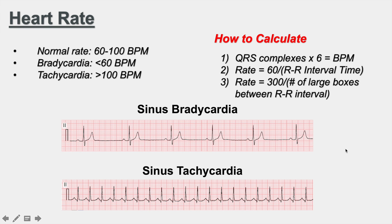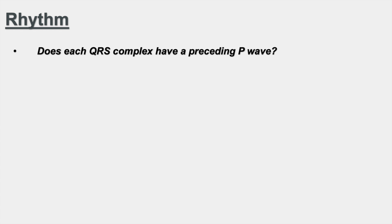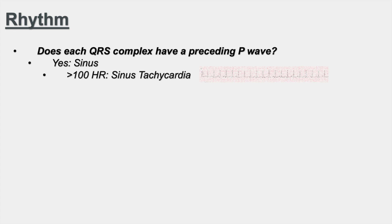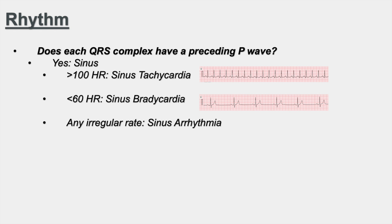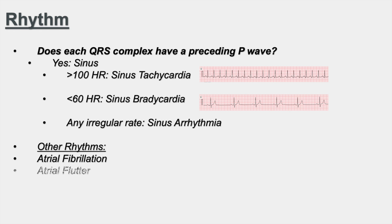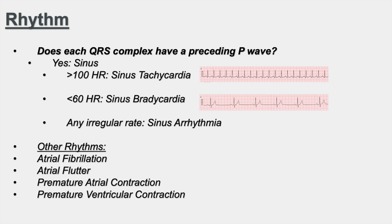Now that we know how to calculate heart rate, how do we determine rhythm? The key question is: does each QRS complex have a preceding P wave? If yes, it's a sinus rhythm. A rate greater than 100 is sinus tachycardia, less than 60 is sinus bradycardia, and an irregular rate with preceding P waves is sinus arrhythmia. Other rhythms covered in future lessons include atrial fibrillation, atrial flutter, premature atrial contraction, and premature ventricular contraction.